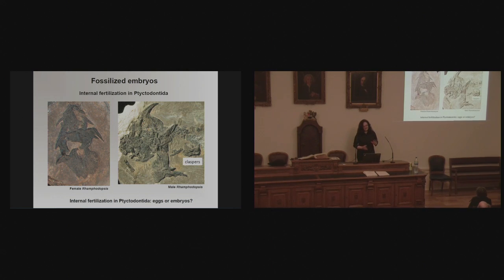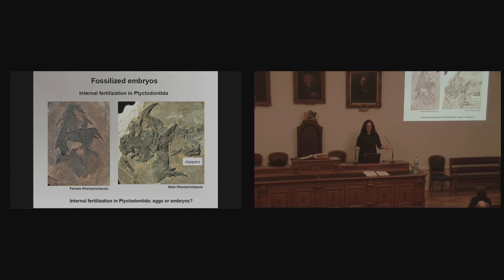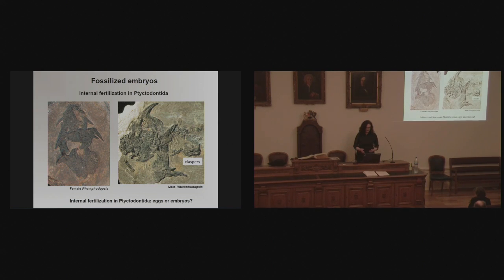Although we knew that internal fertilization occurred in some ptyctodontids among the placoderms, we didn't know whether that internal fertilization resulted in eggs or embryos. I'm sure everybody's been on the beach and seen those mermaids' purses — those are sharks laying eggs. So we knew that ptyctodontid placoderms had internal fertilization, but what was the result — eggs or embryos?